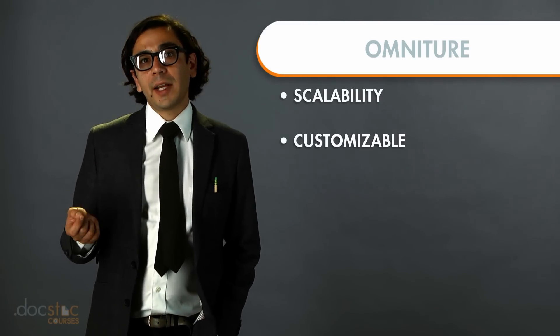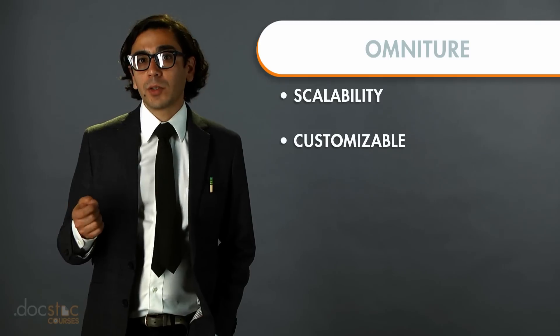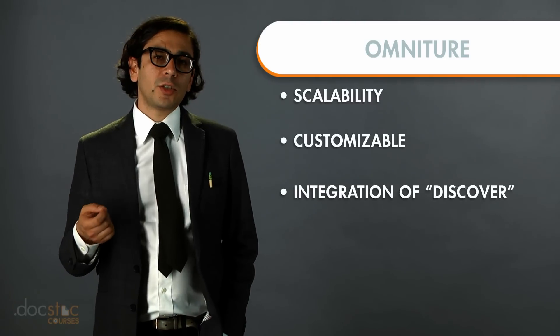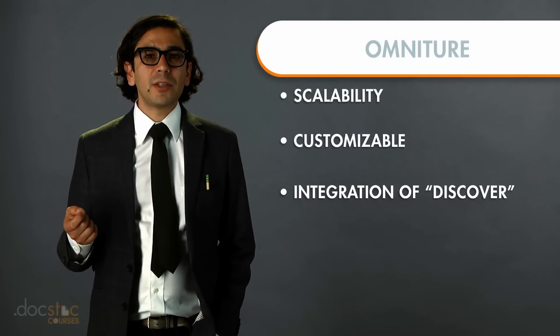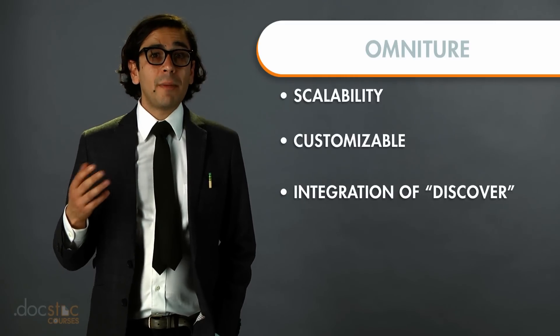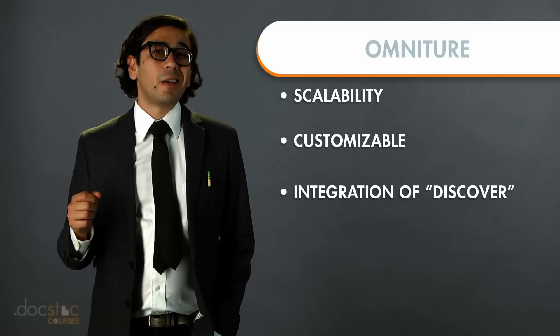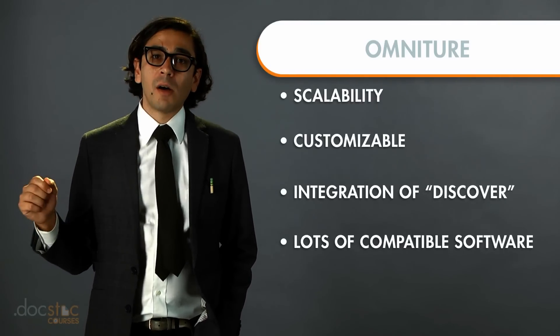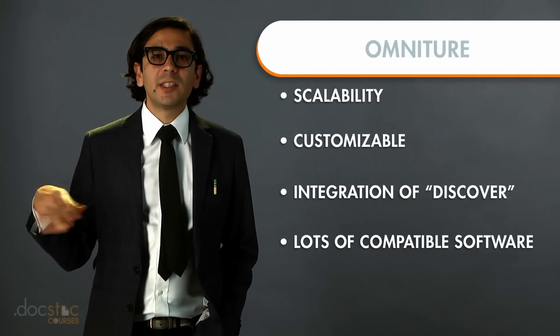There are some other concrete advantages of Omniture versus Google Analytics. The main one is Discover. Discover is a Java application that allows you to tap into web analytics information and use it kind of like a pivot table in Excel. You can drag and drop all manner of fields and dimensions, create custom groups of people and custom segments, and that is only available through Omniture.